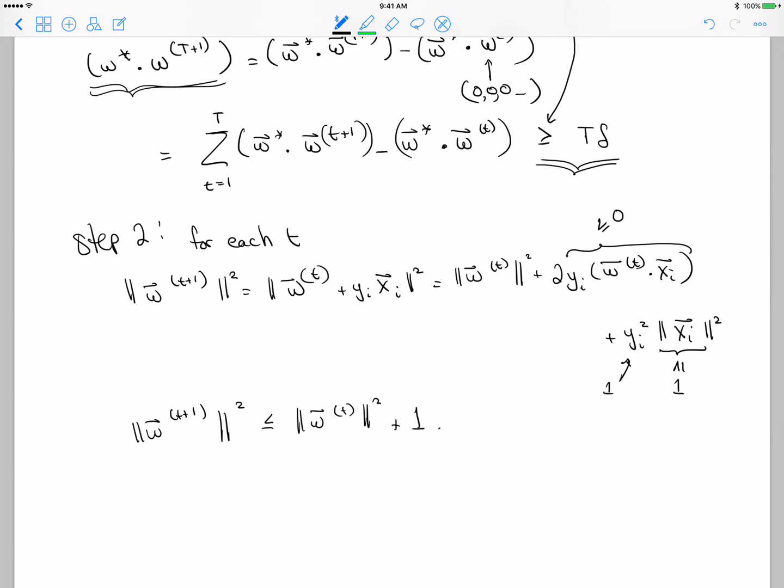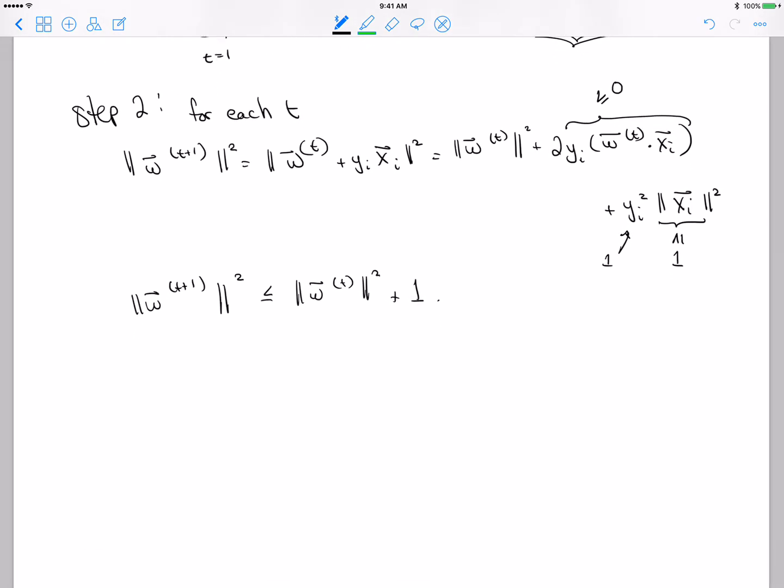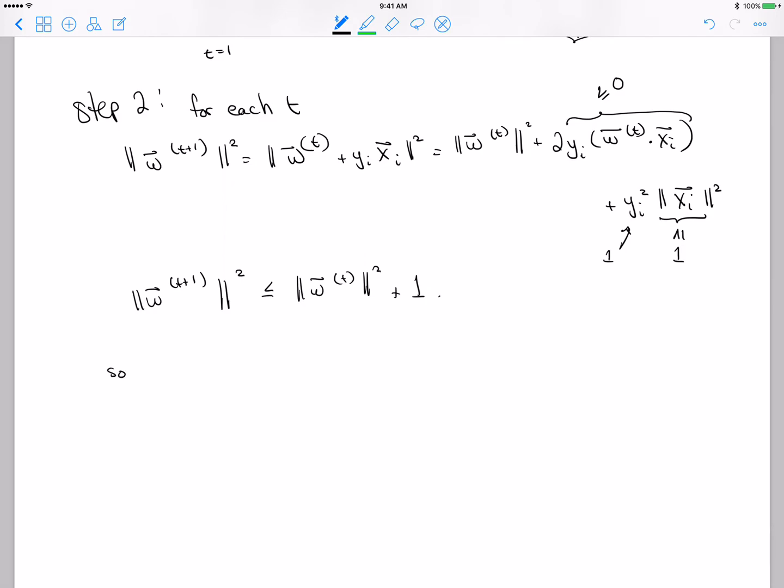So the norm cannot increase more than 1 at each iteration. What that means is that at time big T+1, since the norm of W started off at the very beginning being 0, and it couldn't increase more than 1 at every iteration, then the maximum it can be is actually T.